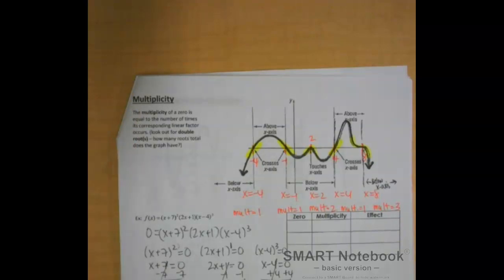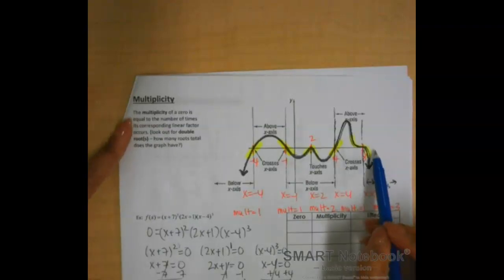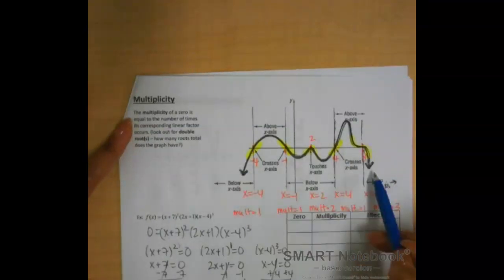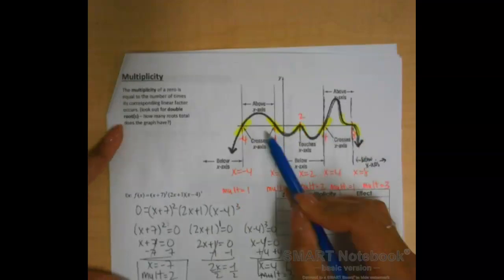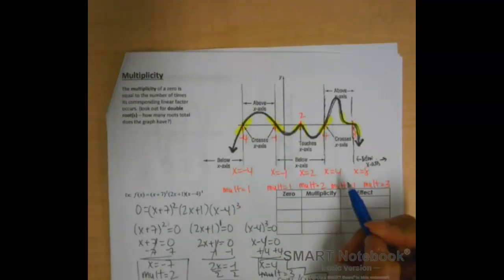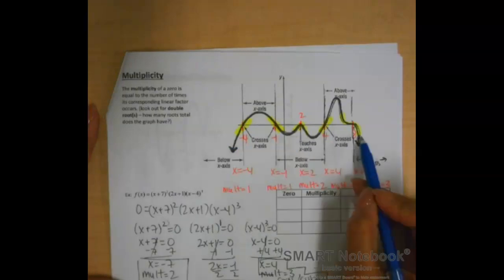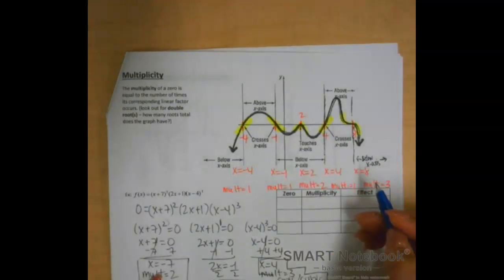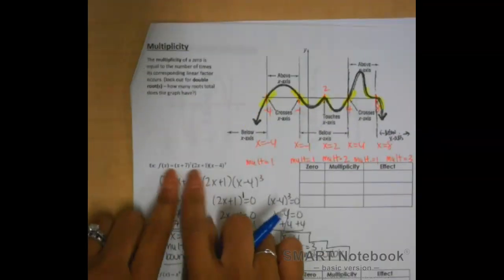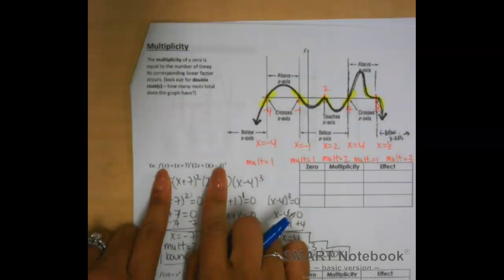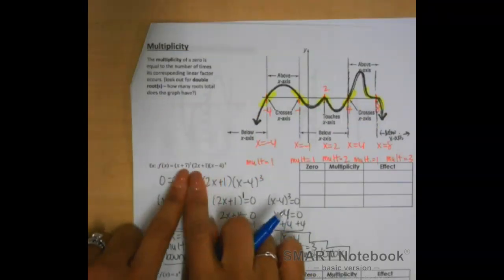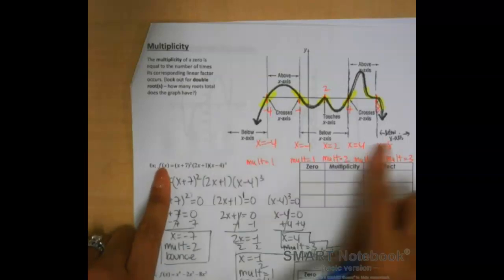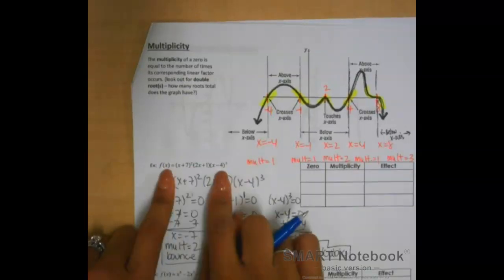Today we're going to focus on graphing and writing the equations of polynomial functions. I'm going to start by helping you label the general equation for this graph. For this graph, you're asked to write out the equation that represents the function. The first thing you need in order to write out the equation is the x-intercepts — we already have those. This would be a general equation for a polynomial function, but I need to show you how we get from the x-intercepts to this general equation.